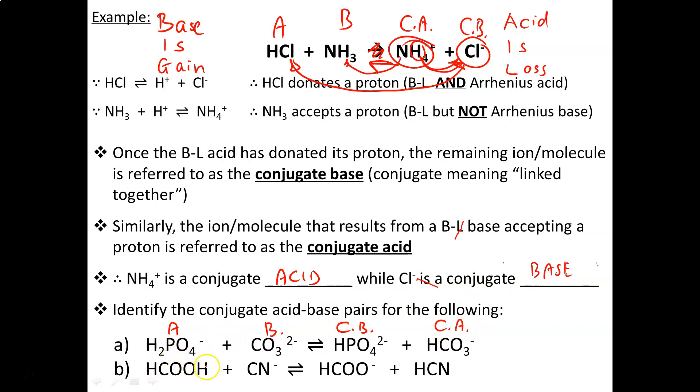Similarly down here, HCOOH has lost an H, so we can call it an acid, and CN- has gained an H, so we can call it the base. HCOOH was the acid, so therefore this must be the conjugate base. CN- gained an H, so now it's called the conjugate acid instead.